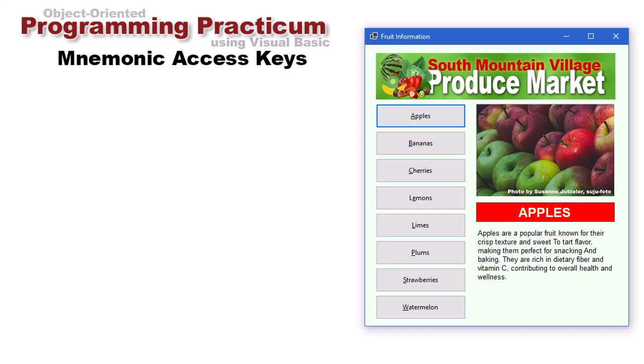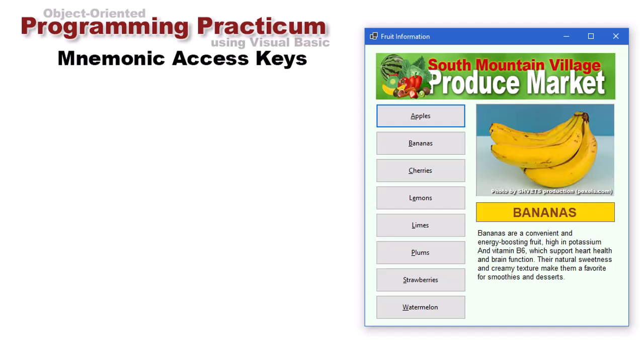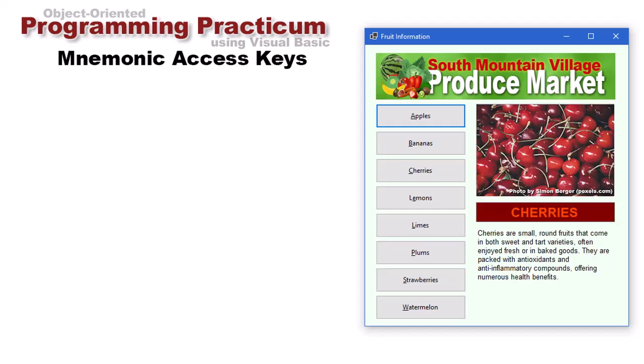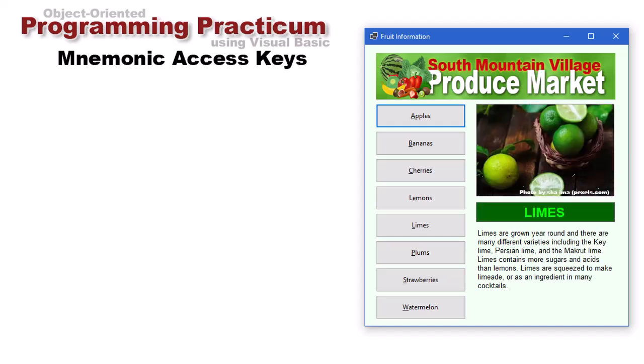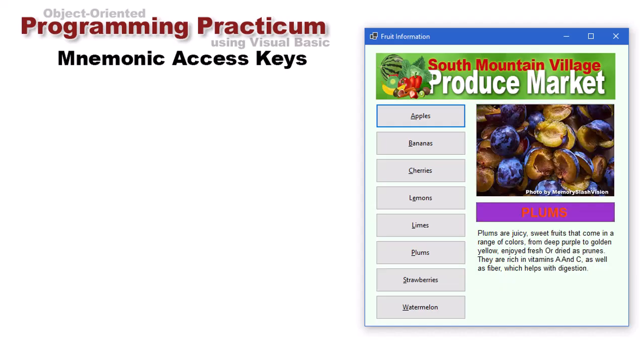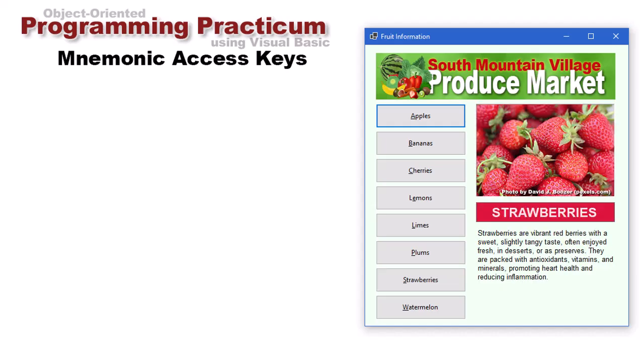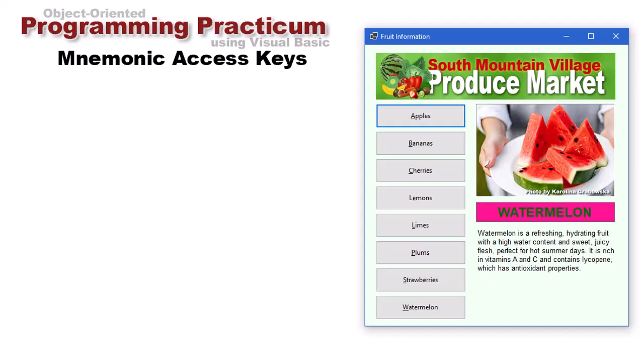I can press alt A and get apples, then alt B for bananas, alt C for cherries, alt E for lemons, L for limes, alt P for plums, alt S for strawberries, and alt W for watermelon. It's the same as clicking on those buttons using the key mnemonic.